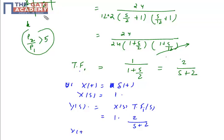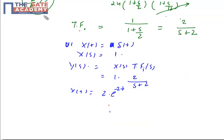Which is 1 times 2/(s+2). So y(t) will be 2e^(-2t). But the question asks for the response at t equals 2 seconds. So putting t=2, we get 2e^(-4), which turns out as 36.63 × 10^(-3), or 0.03663.